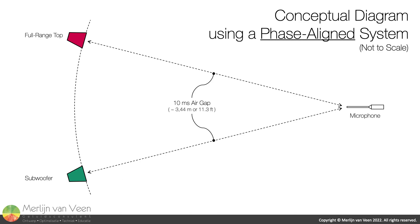Here is a conceptual diagram of an imaginary setup featuring two loudspeakers, each separated by a 10 millisecond long air gap from the same measurement microphone. At room temperature, the 10 millisecond propagation time corresponds with a distance of roughly 3.44 meters or 11.3 feet. The red loudspeaker represents a full-range loudspeaker, whereas the green loudspeaker represents a band-limited subwoofer. The complete system in this example is phase-aligned off the bat as long as the loudspeaker grilles are coplanar.